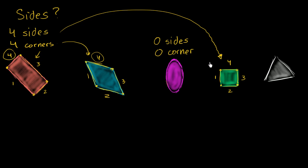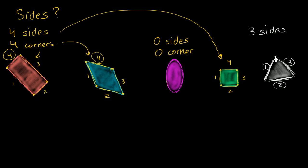Do all shapes have four sides and four corners? No, not at all. I mean, this one right over here had zero sides and zero corners. And actually, this last shape right over here doesn't seem to have four sides or four corners. If we count them, we have one side, two sides, and three sides. So this one has three sides. And if we count the corners, we have one corner, two corners, and three corners.